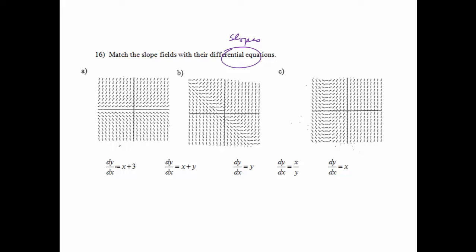So if I look down here where it says dy/dx equals x plus 3, I know that the slope is going to equal 0 when x equals negative 3. Because if I plug in negative 3, I will get 0.